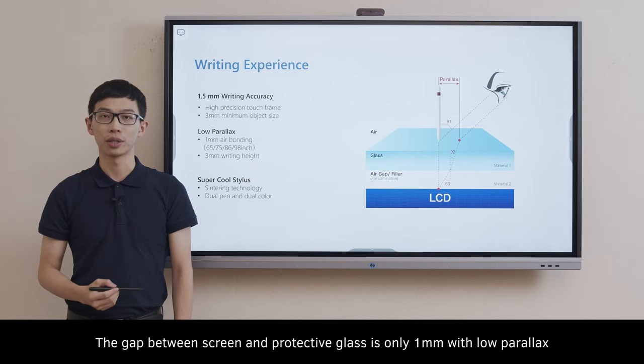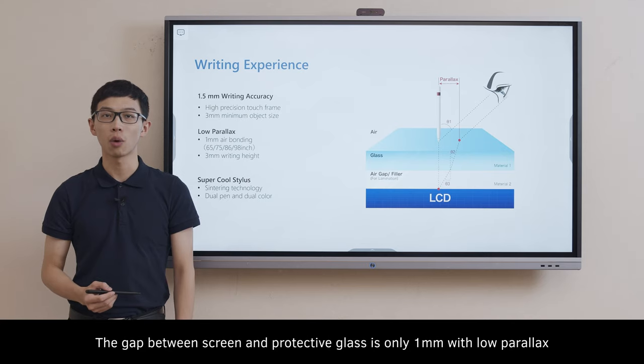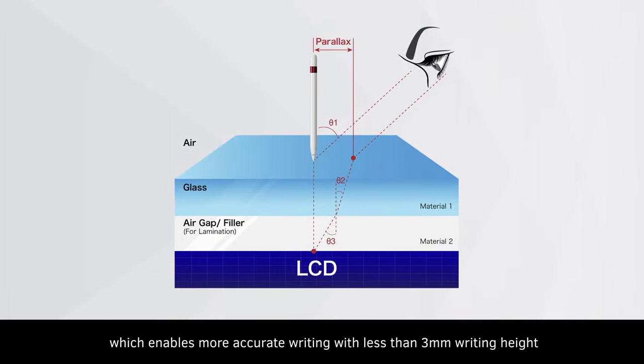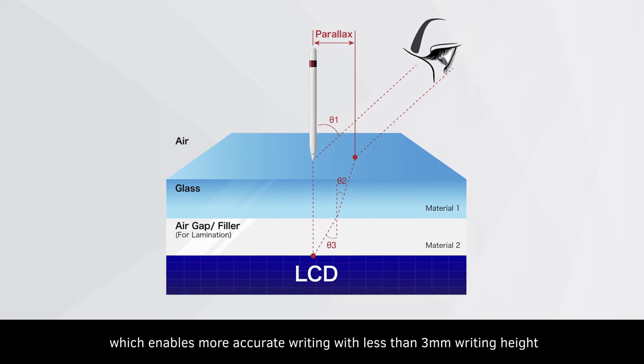The gap between the screen and protective glass is only 1mm with low parallax, which enables more accurate writing with less than 3mm writing height.